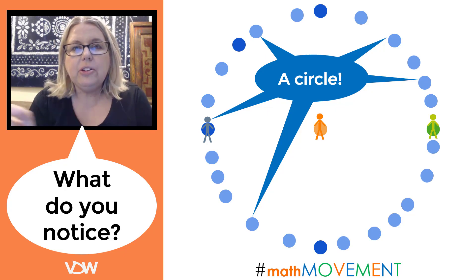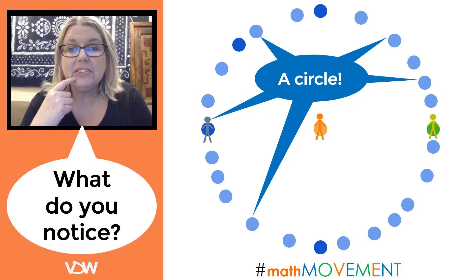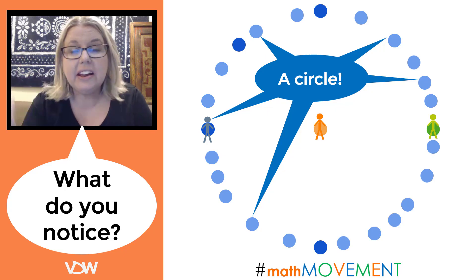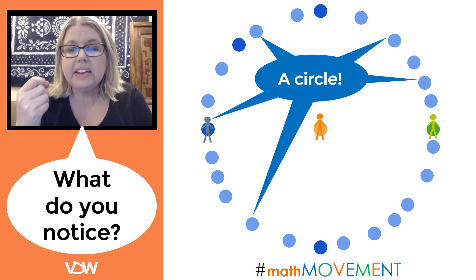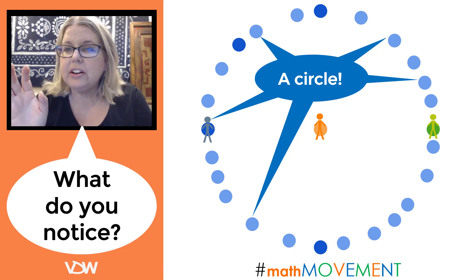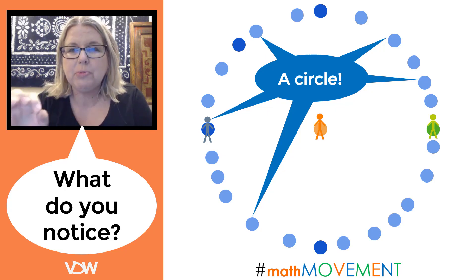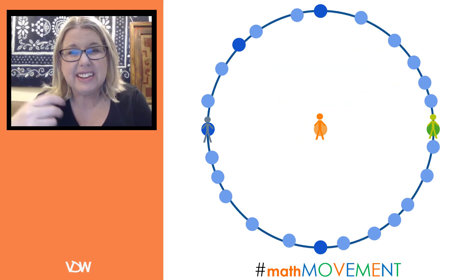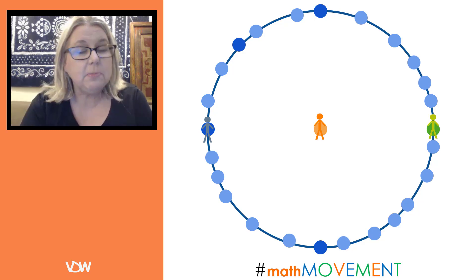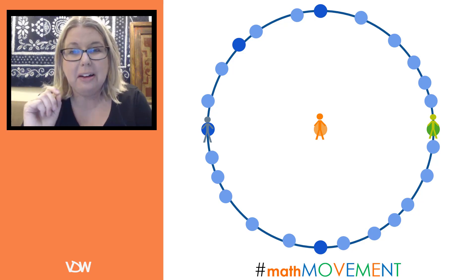I direct a class conversation: what does it mean for it to be a circle? Students might say things like 'we're standing around the person in the middle,' and I keep pushing for details. Eventually students start to say things like 'we're all standing the same distance from the person in the center.' We talk about how each of us represents a point, and we consider: what if all the students in the school were standing there? There'd be so many points that it would fill up and we could connect them all with a curve — a collection of points all the same distance from the center.